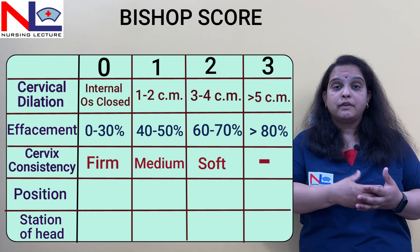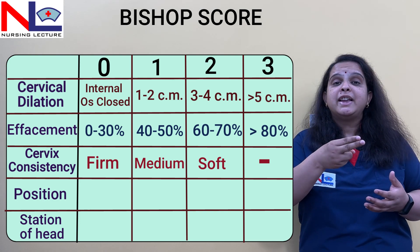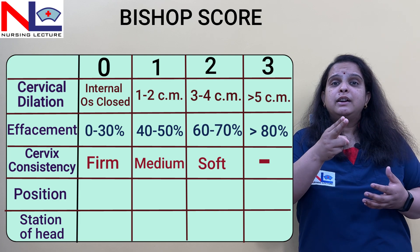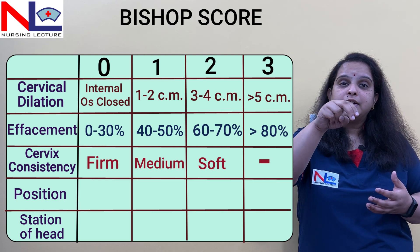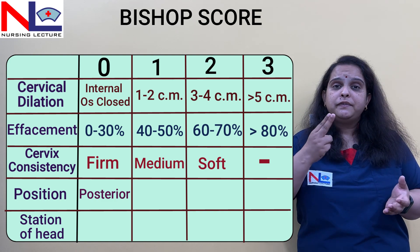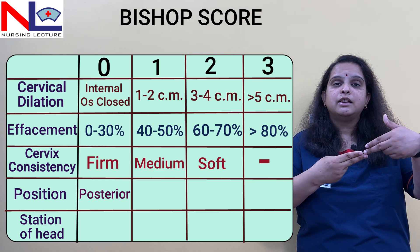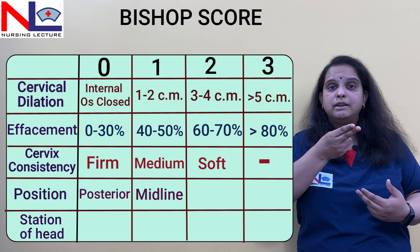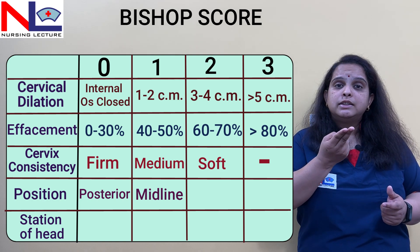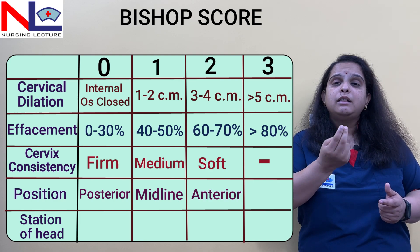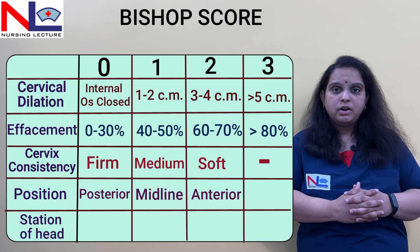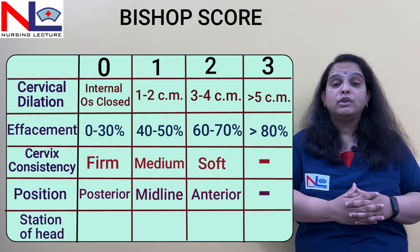The fourth parameter is the position of the cervix. On PV examination, we assess where the cervix lies in relation to the vagina. If our fingers bend posteriorly to reach the cervix, it is in a posterior position and we score 0 — not a good outcome. If the cervix is in the midline, we score 1. If it is in an anterior position, which has the best outcome, we score 2. The maximum score for this parameter is 2.